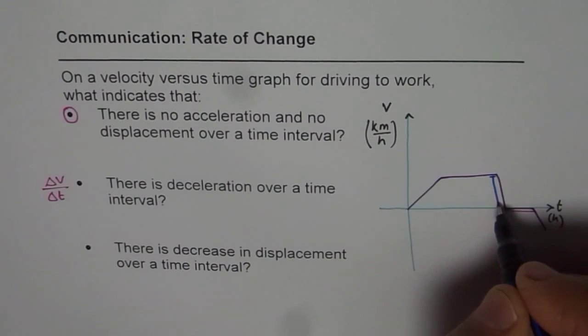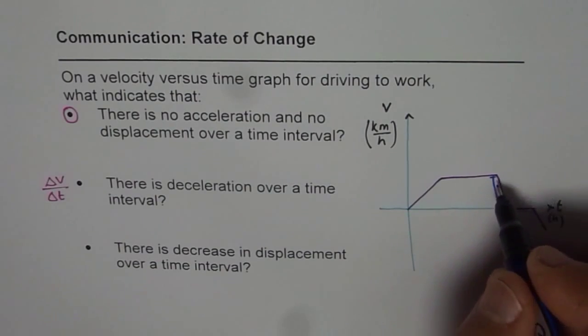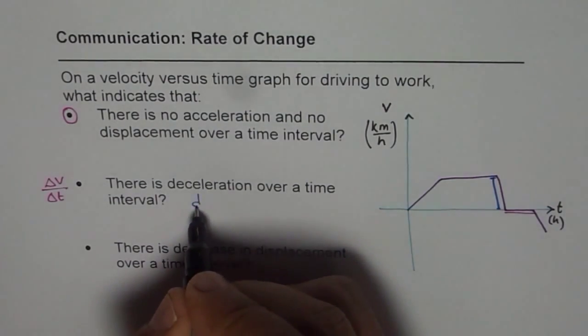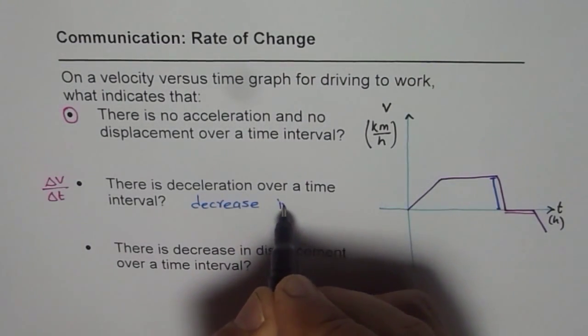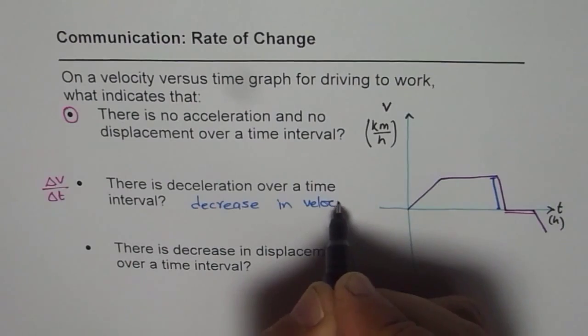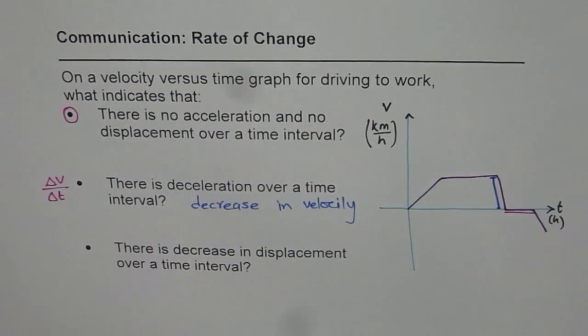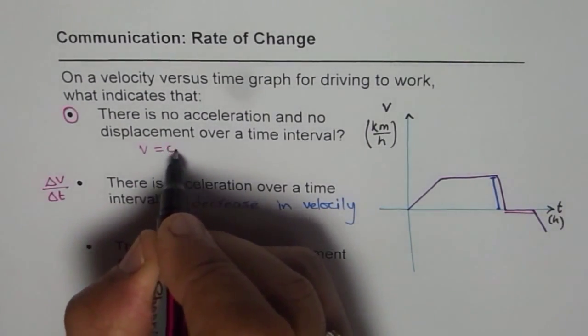Now that decrease shows de-acceleration. So this is the part where it is de-accelerating. So it indicates a decrease in velocity. In the first case, I should write that velocity v equals zero.